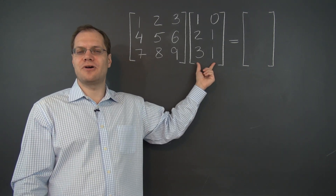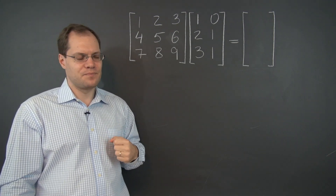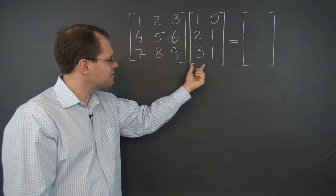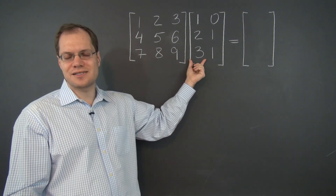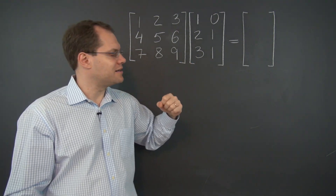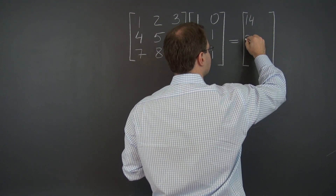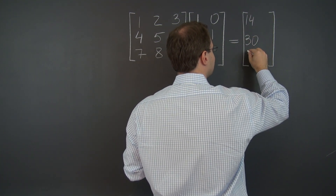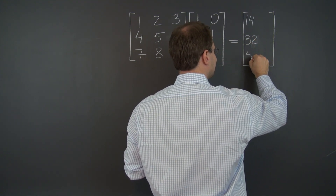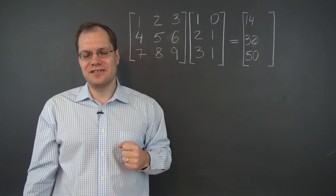This larger matrix product is simply two matrix products in one. We already know from the previous example, because it involved the same matrix and this column, what the first column of the answer is. And it is 14, 32, and 50. So this problem is already half finished.